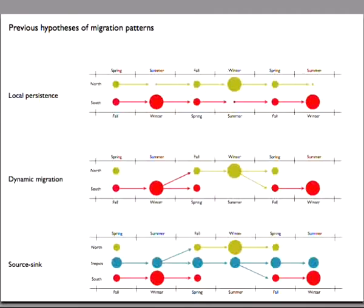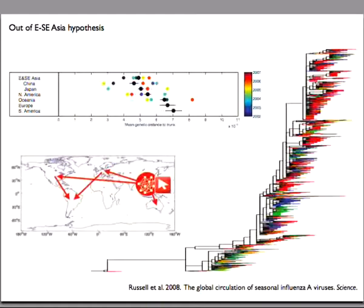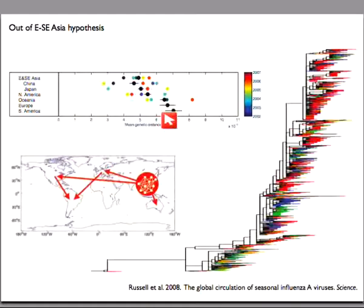The source-sink model was elaborated in the Russell et al. 2008 paper. They did a really good effort to get samples from a number of places around the world, built a phylogenetic tree, and calculated the distance to the trunk for each region. In general, China and Southeast Asia are closer to the trunk of this tree than North America, Oceania, Europe, or South America. From this they concluded that flu is always moving out of China and Southeast Asia into these other regions of the world — the ordering is due to the pattern of migration, with North America second in this chain.